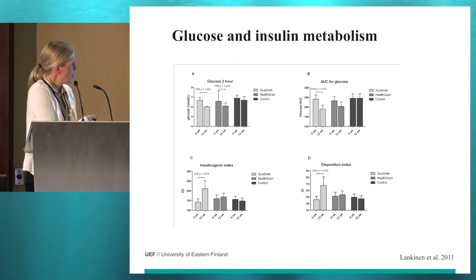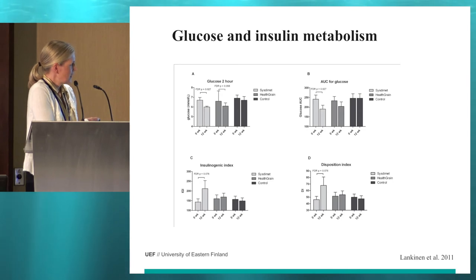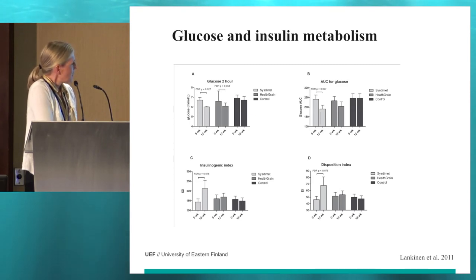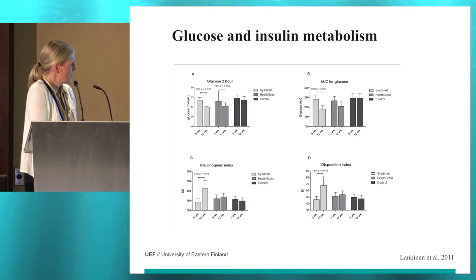What we found was that in the systematic group, the two-hour glucose area under the curve during the OGTT, insulinogenic index, and disposition index all improved. The two-hour glucose improved also in the healthy grain group.